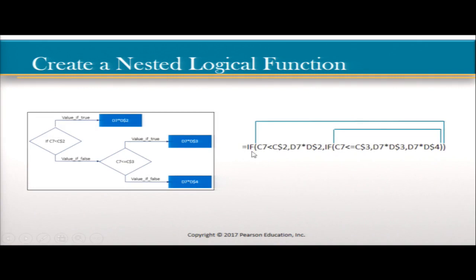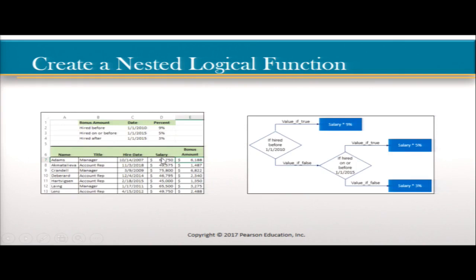Here is the actual formula. You see: if C7 is less than C2, then multiply D7 by absolute value D2 — that's the first condition. If not true, that's where you see the nest: if C7 is less than or equal to C3, multiply D7 by absolute value D3. If not, multiply D7 by D4.